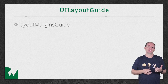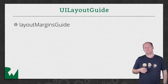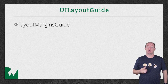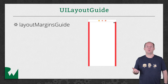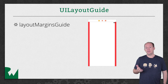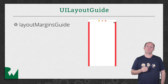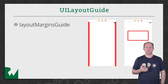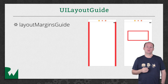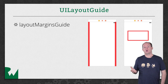The Layout Margins Guide property of a view represents that view's margins. On a top level view the margin cannot be customized and is set by the system to 16 or 20 points on the sides and zero at the top and bottom. On any view other than the top level view, the margins default to 8 points on each edge, but this margin can be customized if you want to change it. The Layout Margins Guide allows you to create constraints to these margins rather than to the edge of the view.